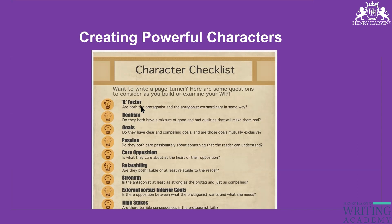Now, external versus interior goals. Every character has some goals, and those goals can be divided into external goals or internal goals. External goals are the main goal — for example, the character wants to become rich. Interior goals are the small obstacles along the way: if the protagonist wants to go to a bigger city, how will they get money, where will they stay? These small fights are the internal goals that, once overcome, help achieve the bigger external goal.